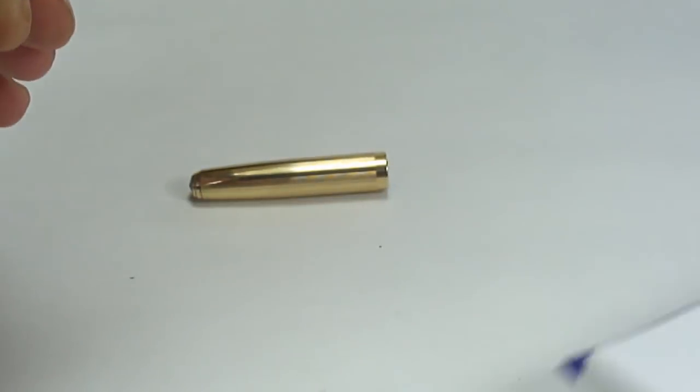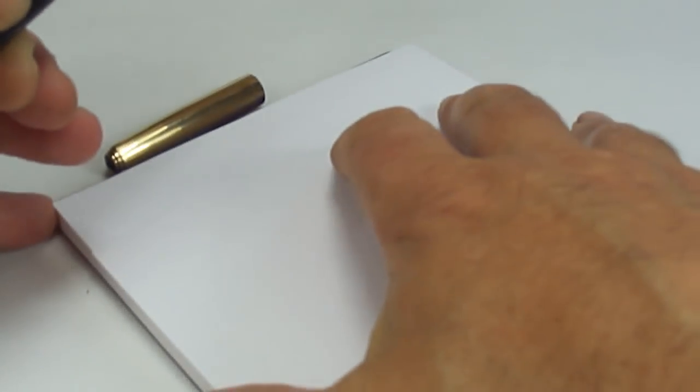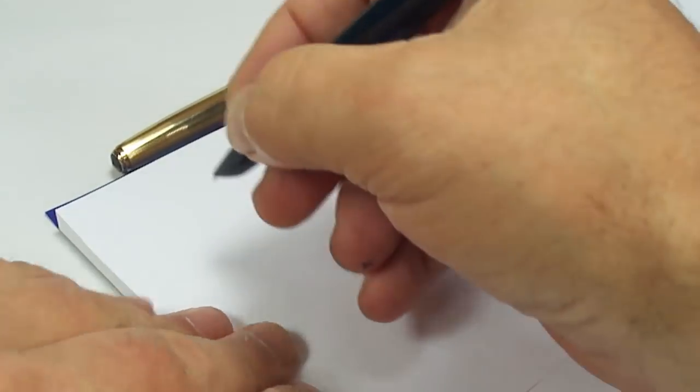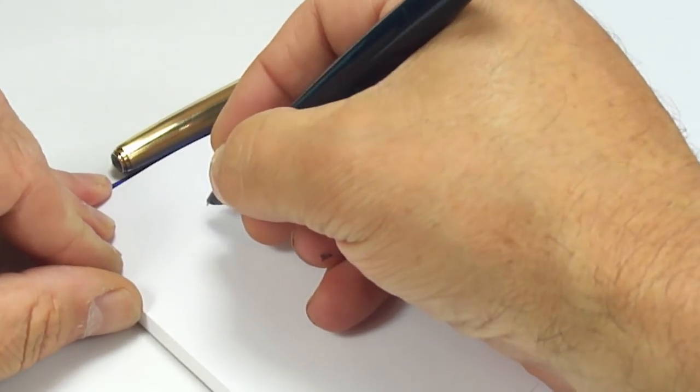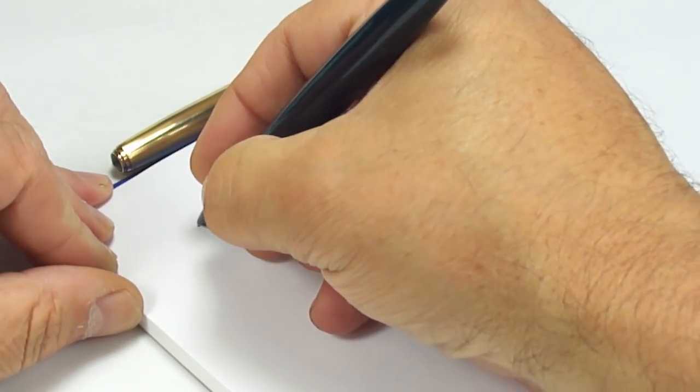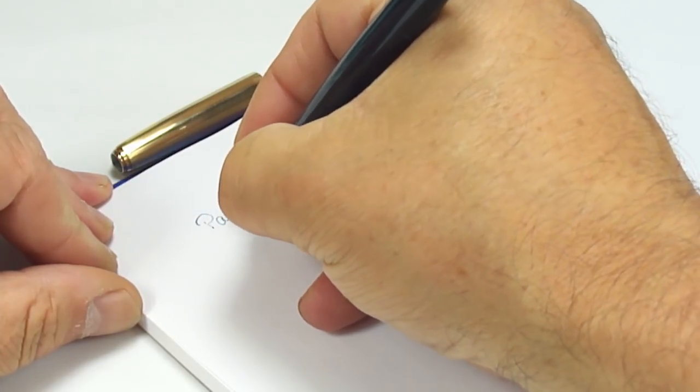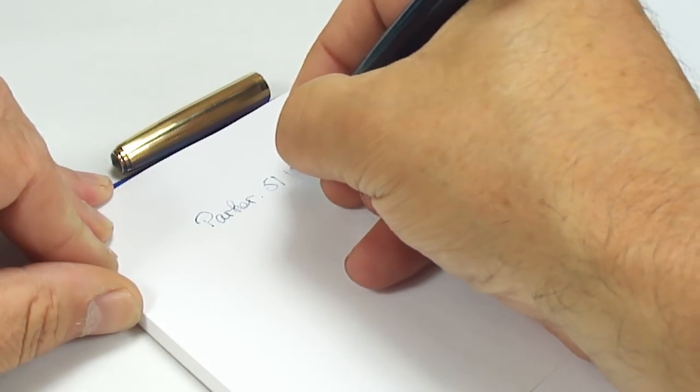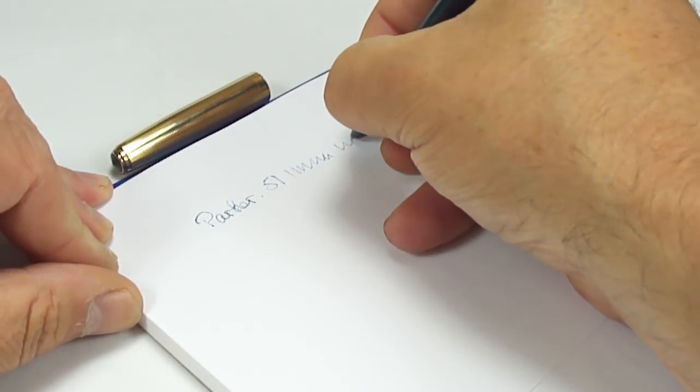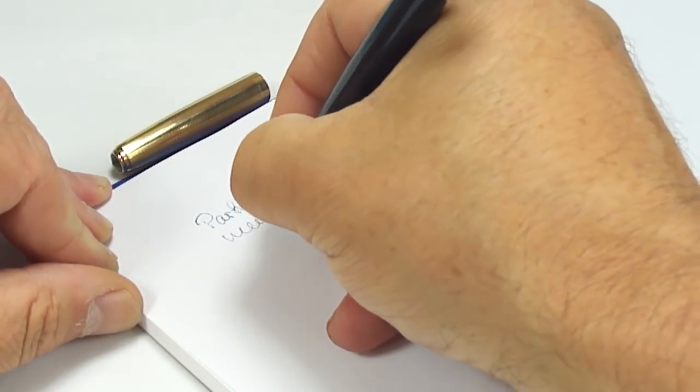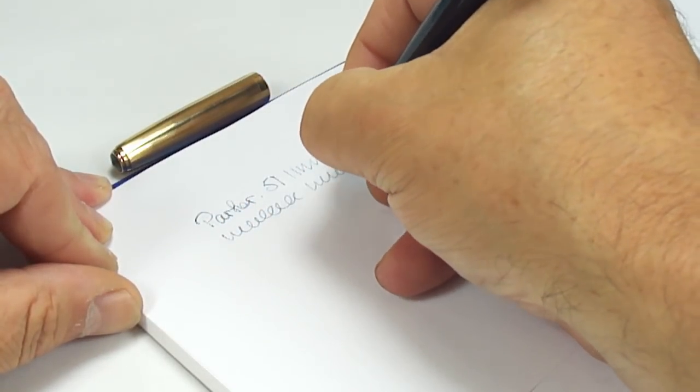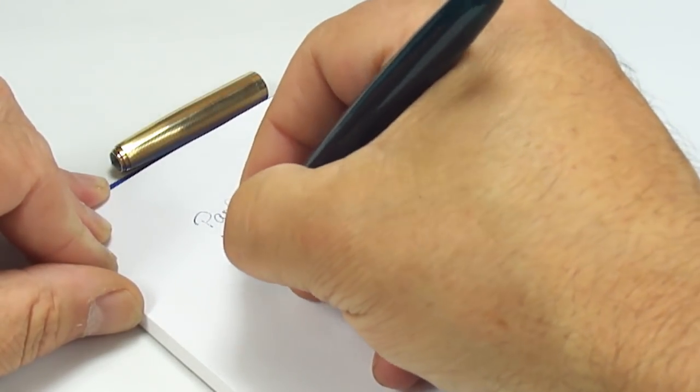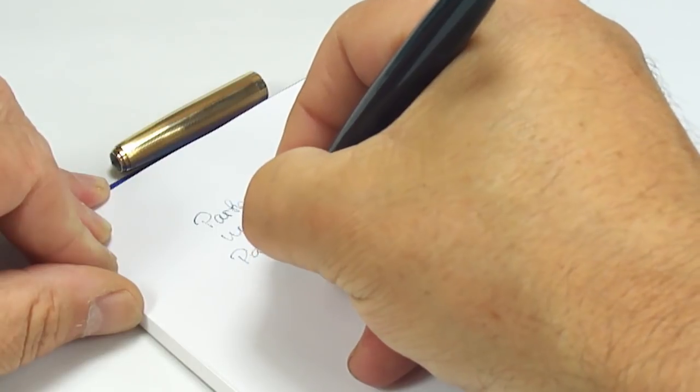Let's pop the blind cap back on. And as always, let's see how the pen writes. First time it's been written with since I've restored it. So let's see how it writes. So what we have is a Parker. Well, the ink flow.